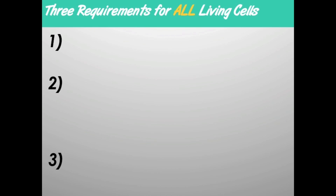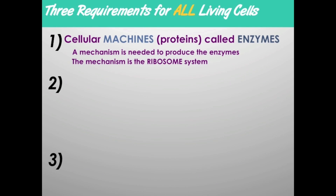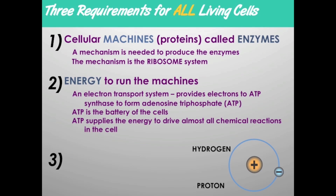There are three requirements for all living cells. All living cells have machines — these machines are proteins called enzymes. The mechanism of formation of these machines is the ribosome system. To run the machines, they have to have energy, which is produced through an electron transport system that transports electrons to an enzyme called ATP synthase. ATP synthase forms adenosine triphosphate, or ATP, which serves as the battery of the cells and supplies energy to drive almost all chemical reactions.